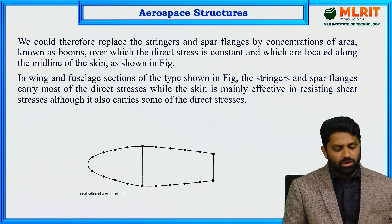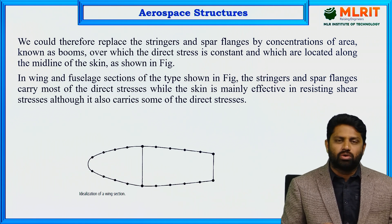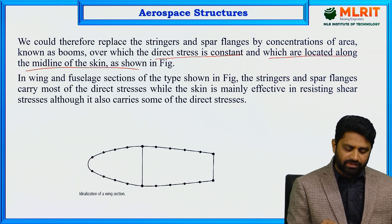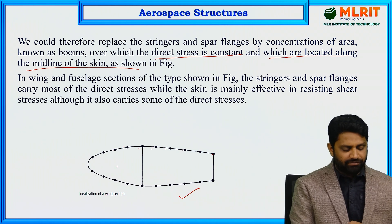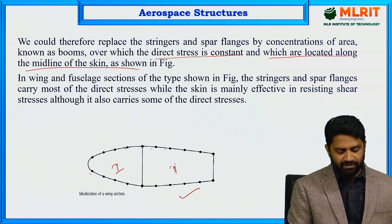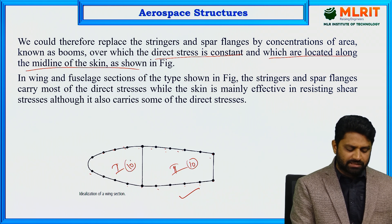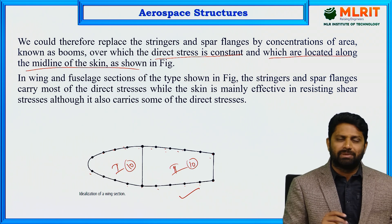So in the wing and fuselage, we replace the stringers and spar flanges by concentrations of area known as booms, over which the direct stress is constant, and which are located along the midline of the skin. In the idealized diagram, all the stringers and spar flanges are removed and replaced by booms. For example, in cell 1 there are 10 booms and in cell 2 there are also 10 booms, giving a total of 20 booms replacing all the stringers and spar flanges.